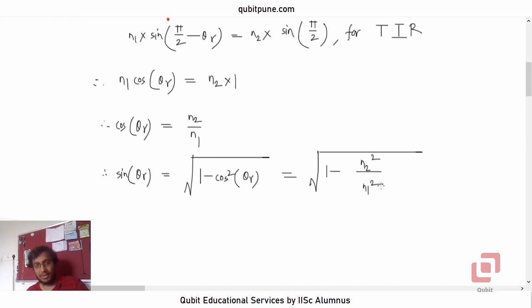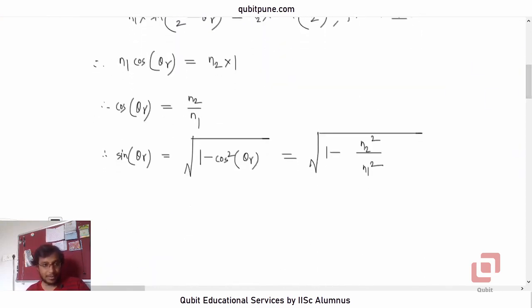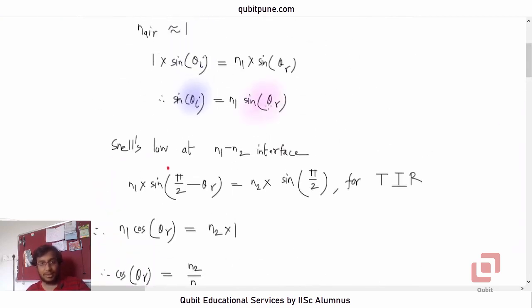Root of 1 minus n2 squared upon n1 squared. So let's now put this sine theta_r here. Let's put this sine theta_r here.